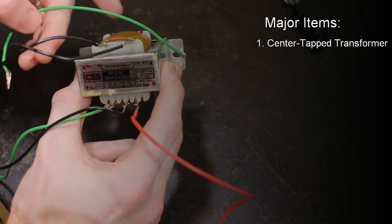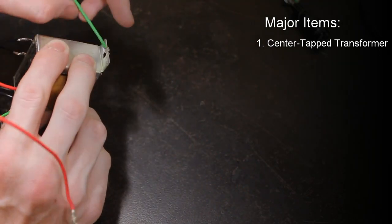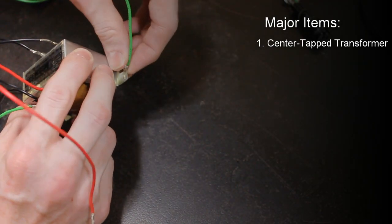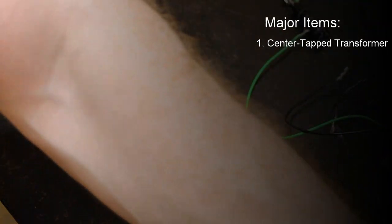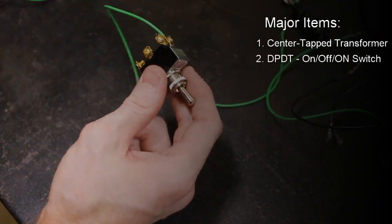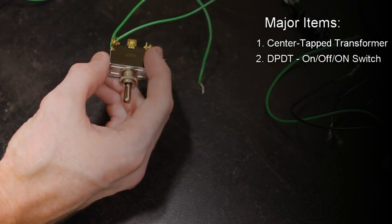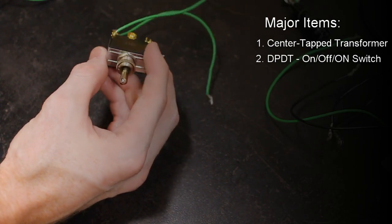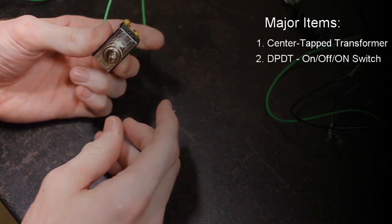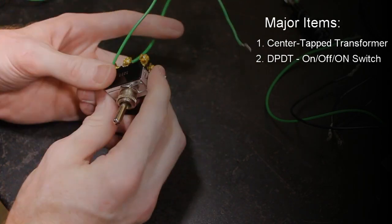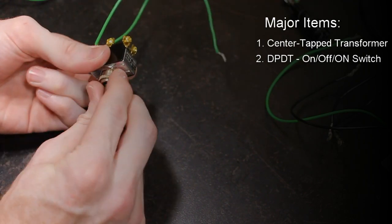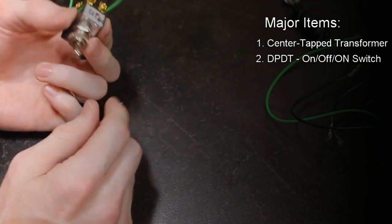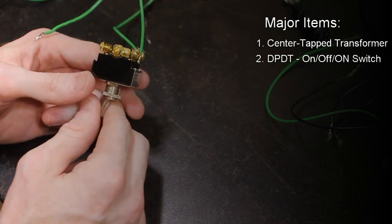These wires I just soldered them on to the connections and then I tied this one around here just to be a ground wire later. The next major component is our toggle switch here. And what this switch is going to do for us is it's going to allow us to transition between AC power and DC power. So this is a DPDT on off on switch. You can pick these up pretty cheap.